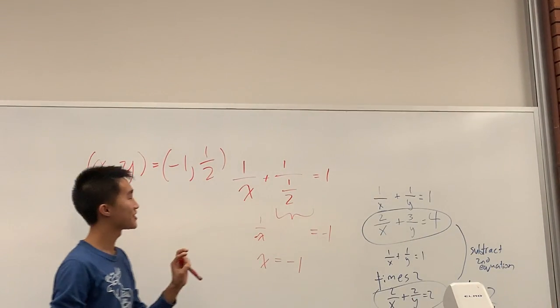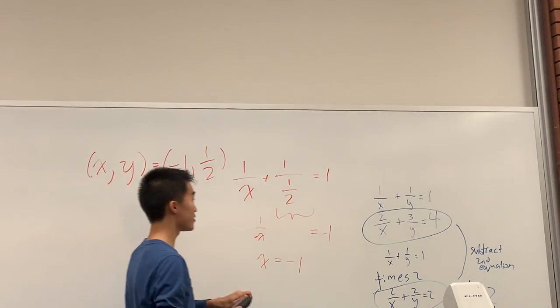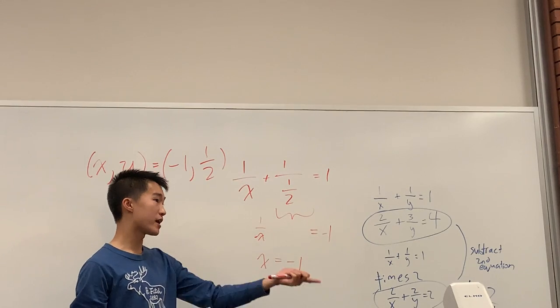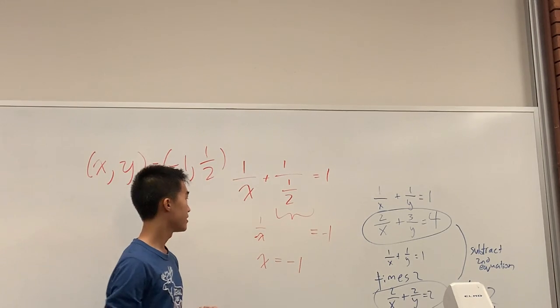And so I would encourage you, try and use fractions in general. Because if you end up with things like 0.3 repeating, that's just 1 over 3, but writing 1 over 3 makes it easier to deal with.